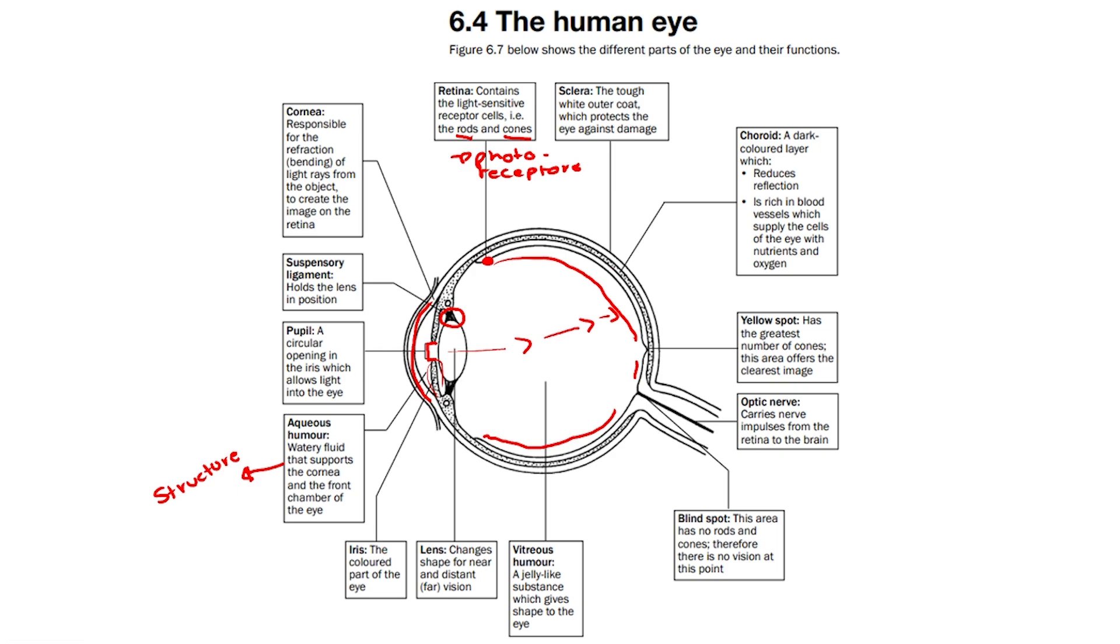Then we have the lens, which is this large round structure over here. The lens changes shape for near or distant vision in order to refract the light rays more so that the light falls on the retina.